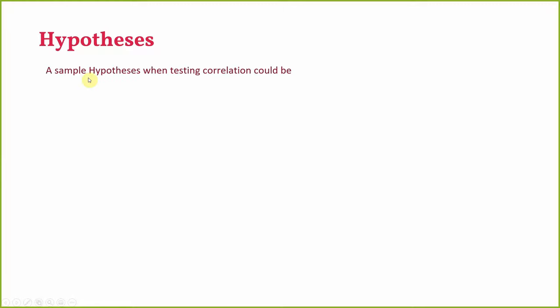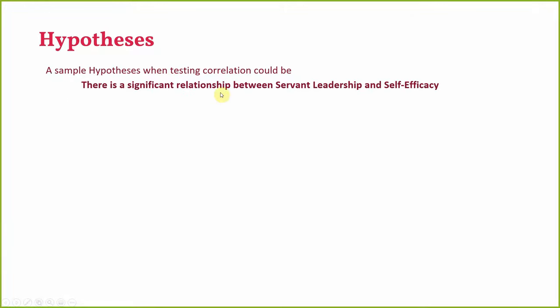A sample hypothesis when testing correlation could be: 'There is a significant relationship between servant leadership and self-efficacy.' We are testing the relationship between the two variables, not establishing that servant leadership has a significant impact on self-efficacy, because correlation does not establish that. Correlation is just the assessment of relationship between two variables.